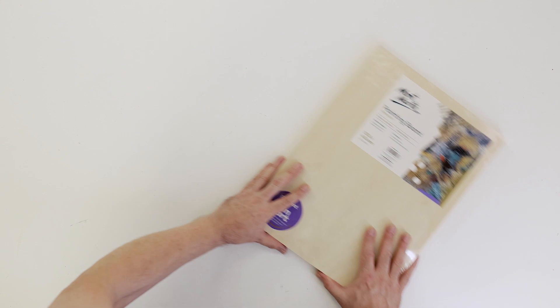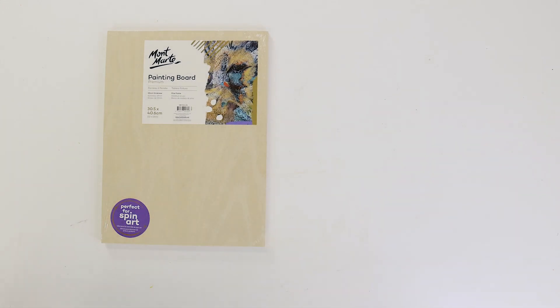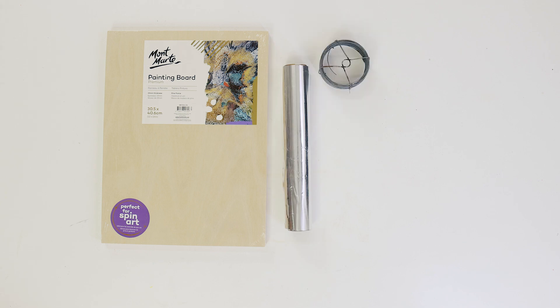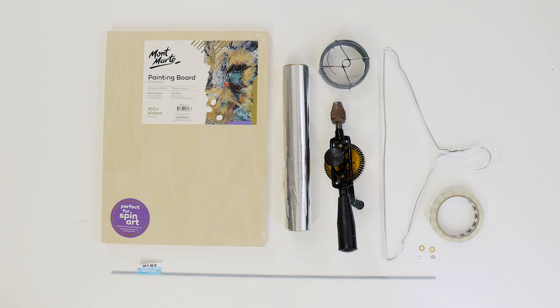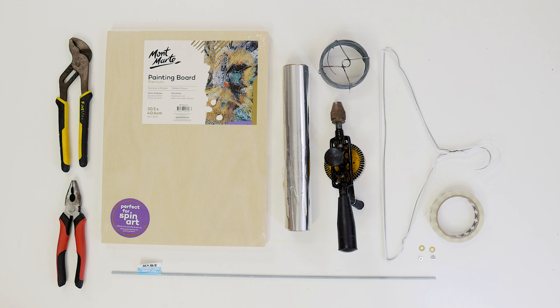For the armature, we'll be using a 30 by 40 centimeter timber painting board for the base, some aluminum foil, a roll of tie wire, a roll of adhesive tape, two wire coat hangers, a 3/16th threaded rod also called a booker rod, two 3/16th nuts and matching washers. A 3/16th drill bit and a drill. We'll also be using a pair of multi grips, a pair of flat nose pliers, and some scissors.